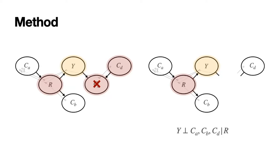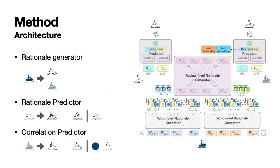Now we have CA, CB, and CD being independent of Y given R. Here is the architecture of our proposed model, recommendation via review rationalization, R3. It consists of three key components: Rationale Generator, Rationale Predictor, and Correlation Predictor.